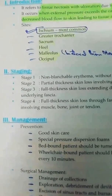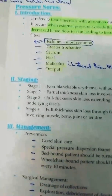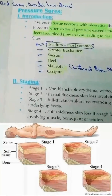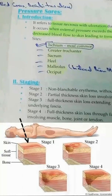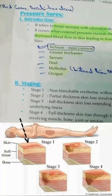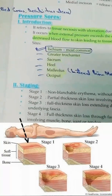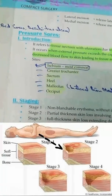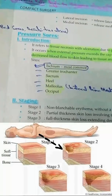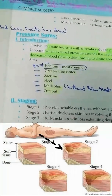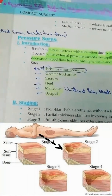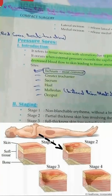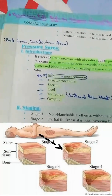We divide pressure sores into 4 stages based on how much skin damage there is. Stage 1 is non-blanchable erythema — there is just redness on the skin without breaching the epidermis, so there is no damage to the epidermis, just erythema. Stage 2 is partial thickness skin loss involving the epidermis and dermis. We call it partial thickness because only the epidermis and dermis are damaged — it is not deeply damaged.